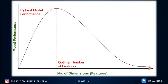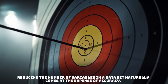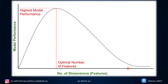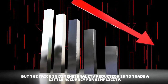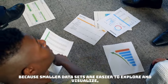Never assume that more features always means better model performance — you run the risk of overfitting. Choosing the right number of quality features is really important, which is why data preprocessing, cleaning, feature engineering, and PCA all come into the picture. Reducing the number of variables does come at the expense of some accuracy, so we need to find that optimal number of features. The trick in dimensionality reduction is to trade a little accuracy for simplicity.